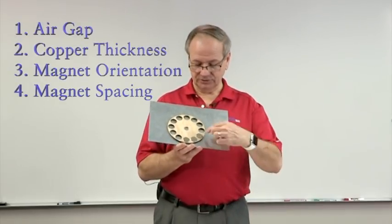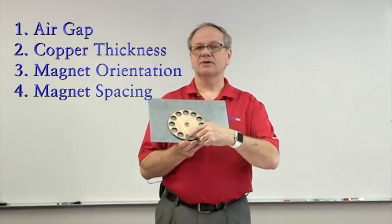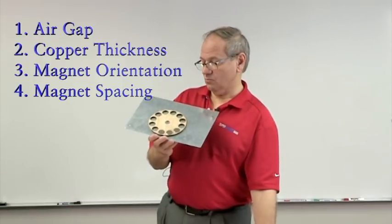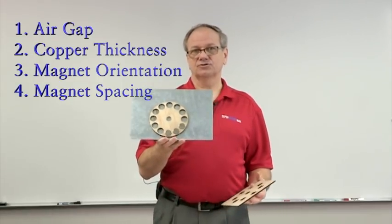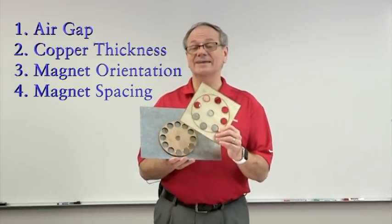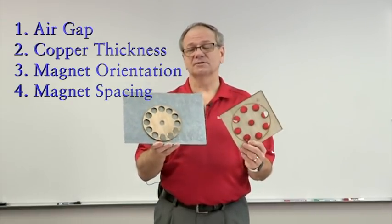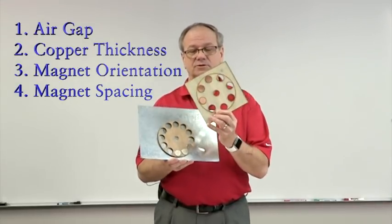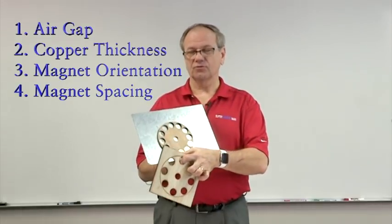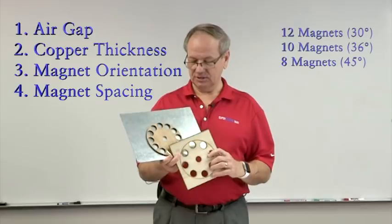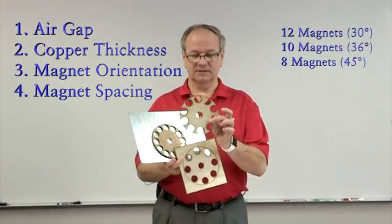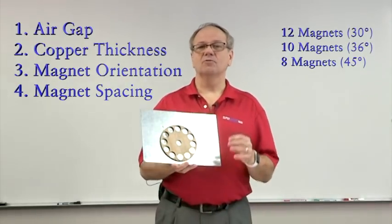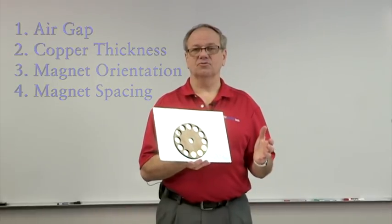Another thing that comes up is spacing — does it matter how close we get the magnets together? With 12 magnets at 30 degrees arc separation versus 8, you obviously get 50 percent more magnets. But I wanted to look specifically at 3 magnets spaced out across 12, 10, and 8 magnet configurations — at 30, 36, and 45 degree separations — to see how much spacing affects the eddy current drag.